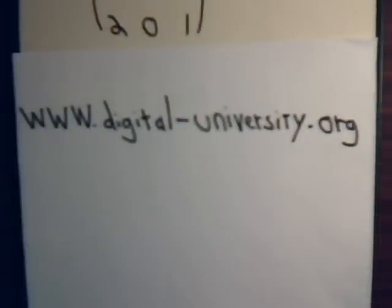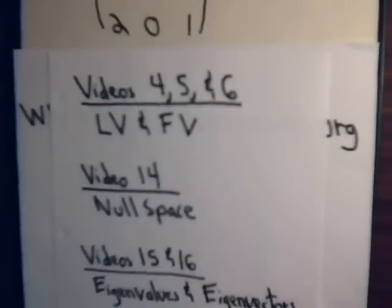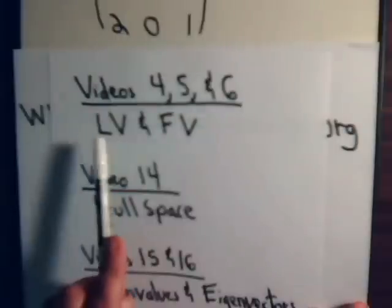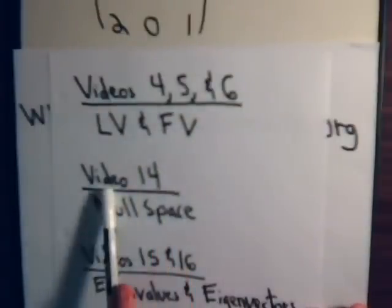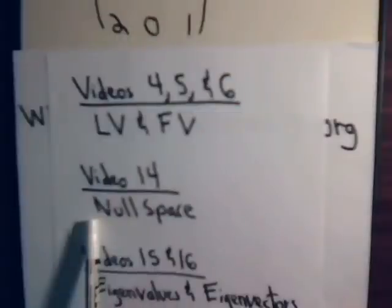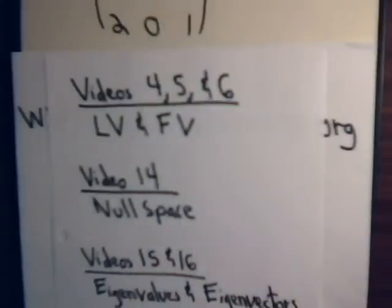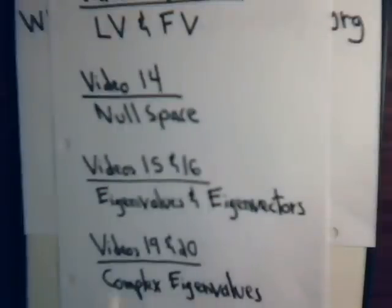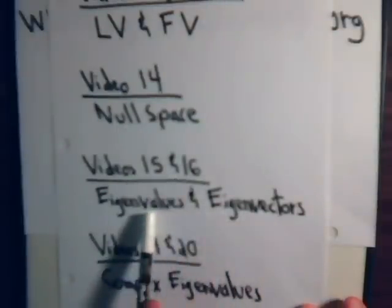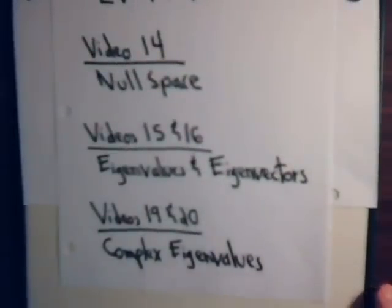Now let's see what happens with this problem. We really are drawing heavily upon what we did in previous videos. In videos four, five, and six, we worked a lot with lead variables and free variables. In video number 14, we dealt with the null space and determined that the dimension of the null space equals the number of free variables once we have it in reduced row form. Then in videos 15 and 16, we started dealing with eigenvalue and eigenvector problems, and in videos 19 and 20, we dealt with complex eigenvalues.